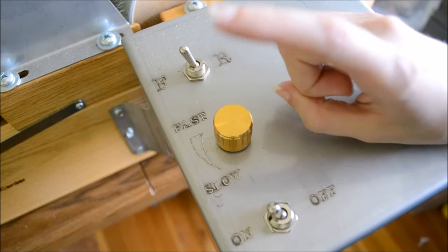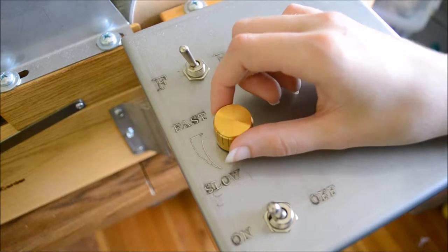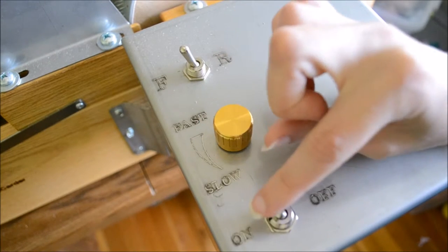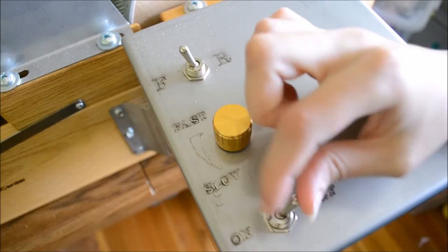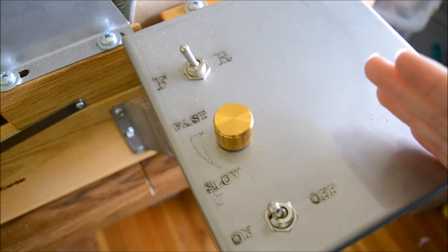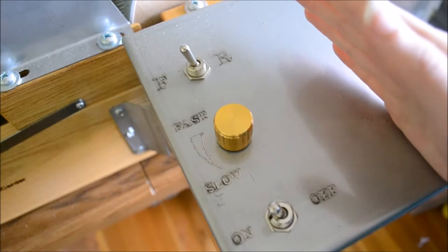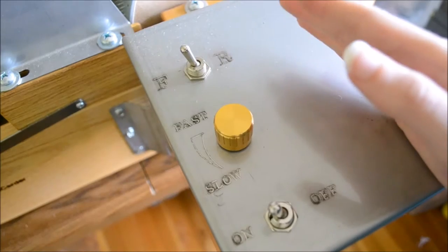The same goes for when you're turning it off. Do not turn it off while it's turning. Turn it all the way down, then turn it off. Because if you're in your car and you take the keys out in the middle of the road without putting it in park, bad things will happen.